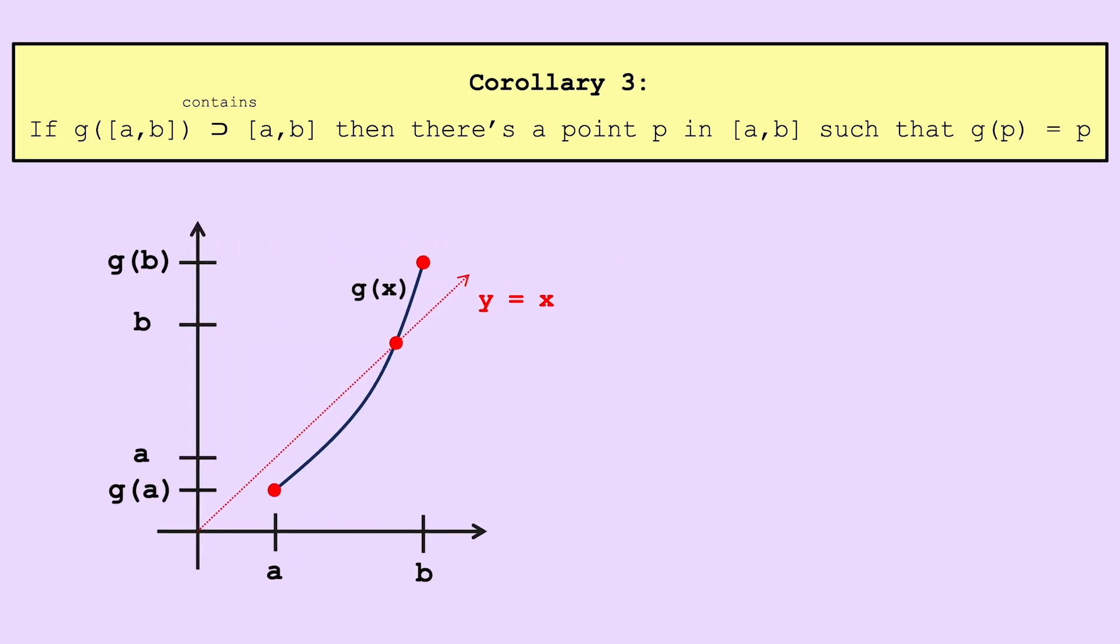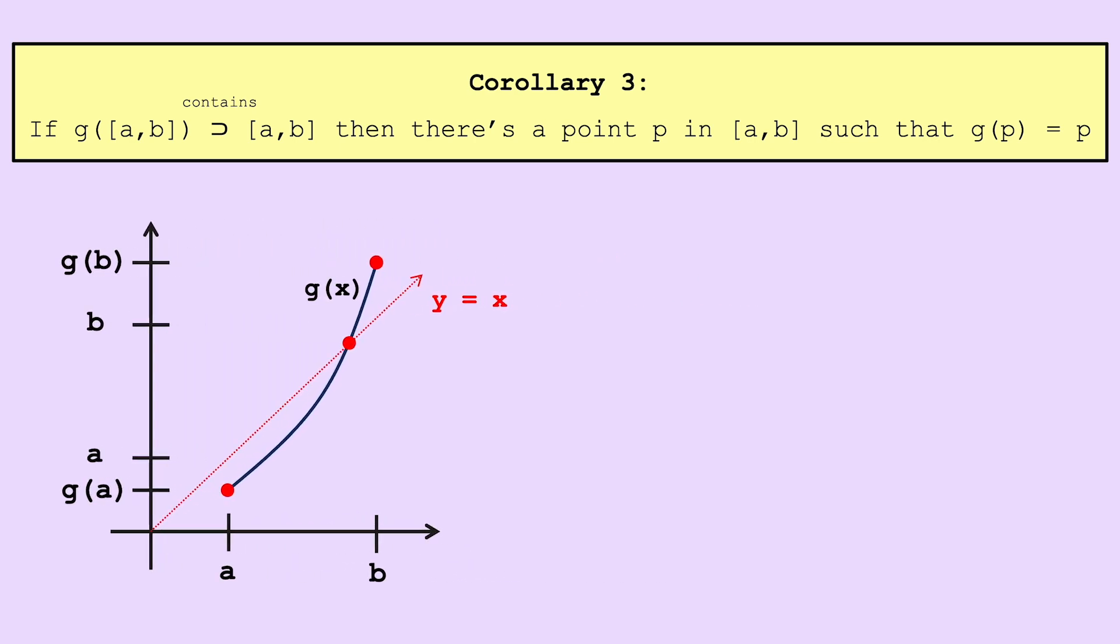Let's take a look at the function g of x minus x and call it h of x. We know g of c equals a for some c between a and b. If c equals a, then a is a fixed point. Otherwise, c has to be greater than a, so h of c is negative. Similarly, g of d equals b for some d between a and b. If d equals b, b is a fixed point. Otherwise, d would have to be less than b, so h of d is positive. But if h of c is less than 0 and h of d is greater than 0, by the intermediate value theorem, there is some p between c and d for which h of p is equal to 0. And this makes p a fixed point.